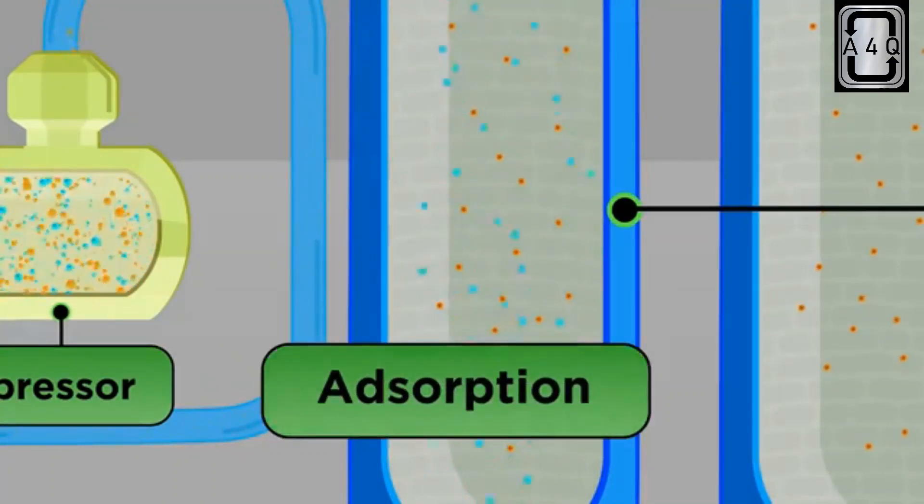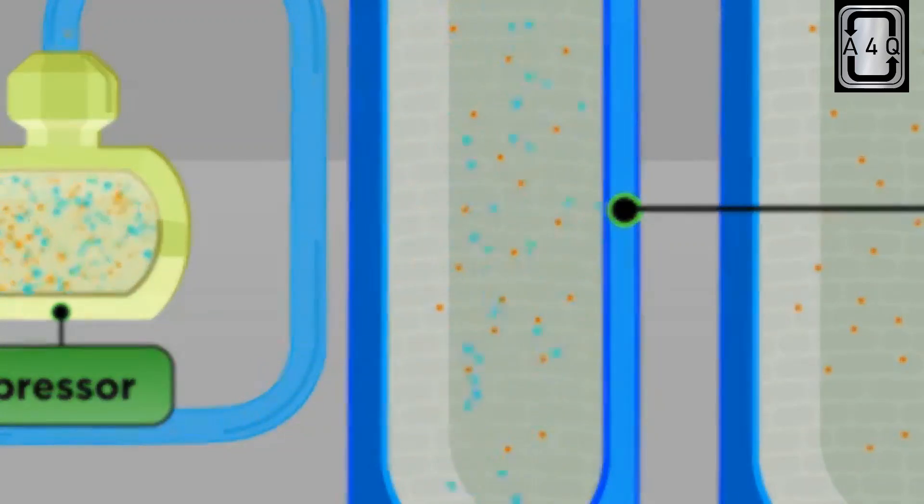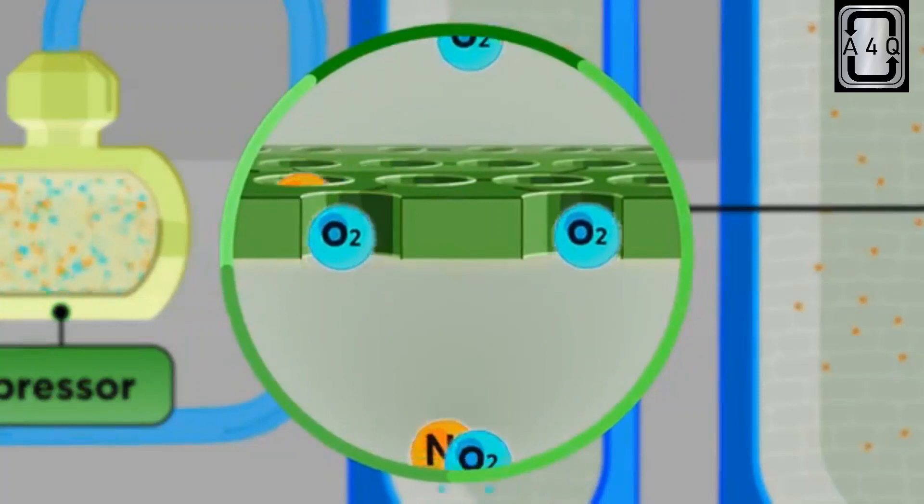Let me explain this. So when air is at high pressure, nitrogen molecules stick to this zeolite filter and oxygen molecules pass through.